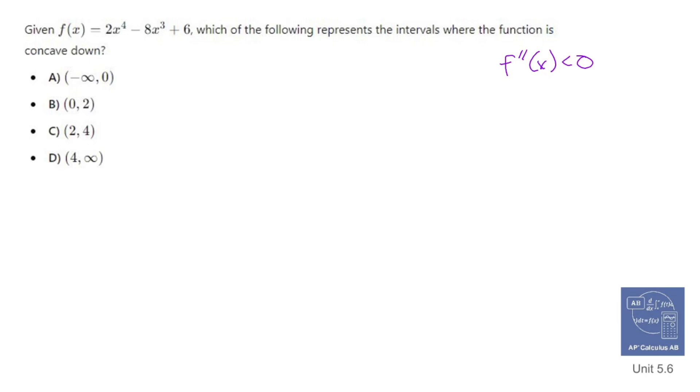In order to find the second derivative, we need to find the first derivative, which involves power rule, power rule, power rule. So you get 8x to the 3rd minus 24x squared plus nothing.